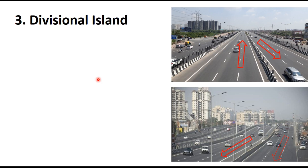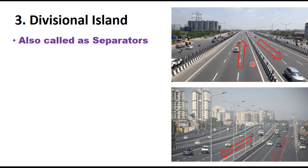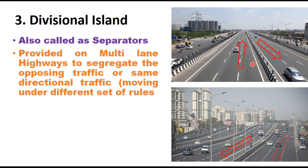The third type is the divisional island. It is a raised median or island placed in the middle of a multi-lane highway to separate opposing lanes of traffic and reduce the risk of head-on collisions. They are also called separators. They are provided on multi-lane roads to segregate opposing traffic, or sometimes to separate traffic moving in the same direction but following different rules, such as on an expressway where streams are separated by a divisional island parallel to the traffic.